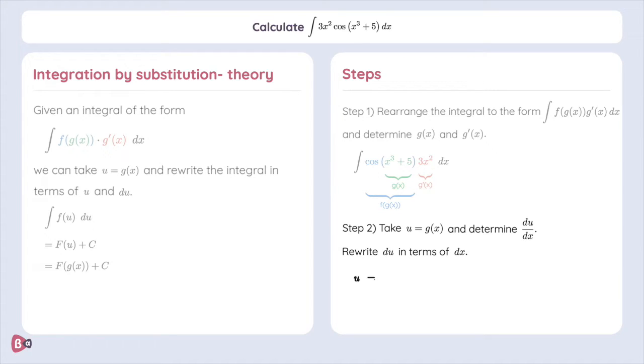So, what do we have? We have u equals x cubed plus 5. This means that the derivative of u with respect to x is going to be given by 3x square. This then allows us to write du as the product of du by dx and dx, which in this case is 3x square times dx.